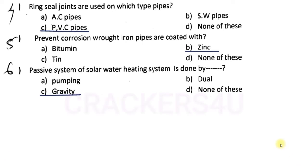Question number six: passive system of solar water heating system is done by — answer option C, gravity.